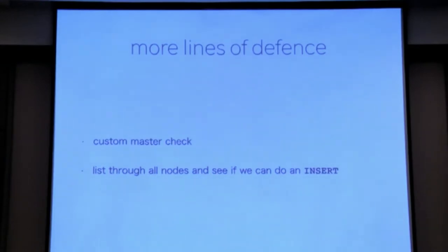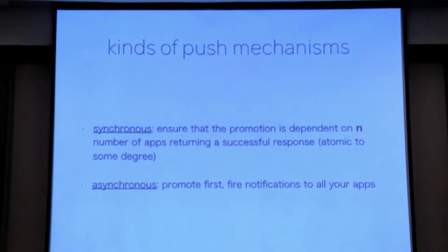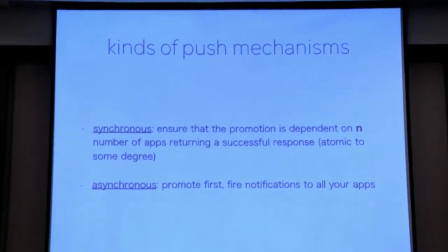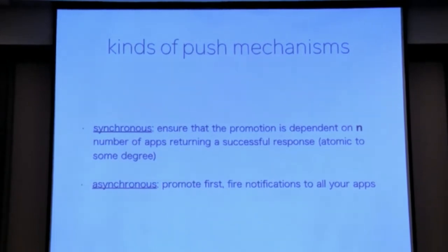But this violates all the properties we've set. Building this introduces application state — all your information about the DB node is in your app — and it's not resilient to network splits. There are two forms of the trigger mechanism: you do not promote your new master unless you can send a successful response to all your apps or consumers, or you make it so only a certain percentage need to succeed. Or you could just promote first and then fire-and-forget calls to all your apps and consumers.